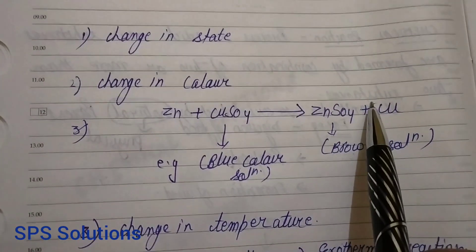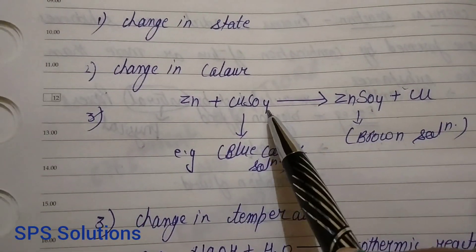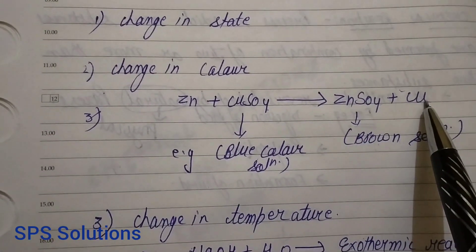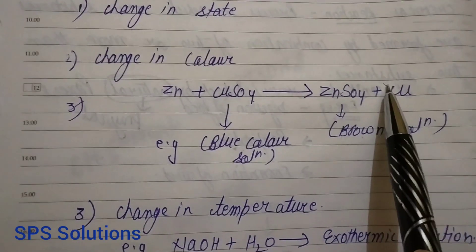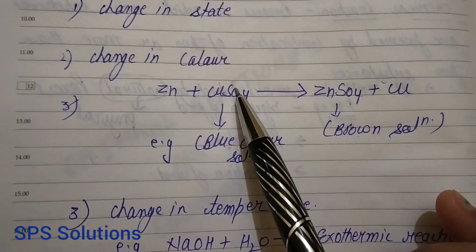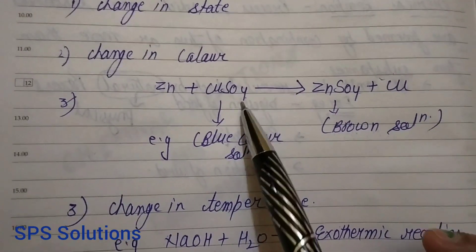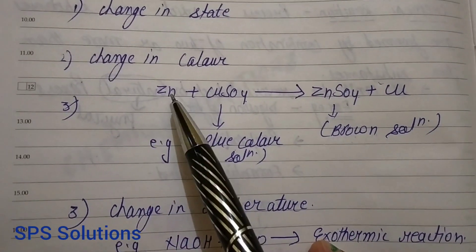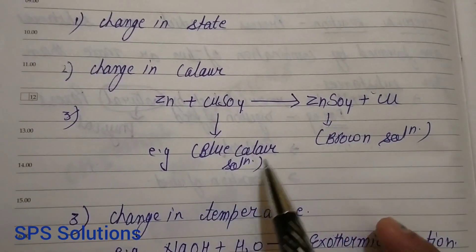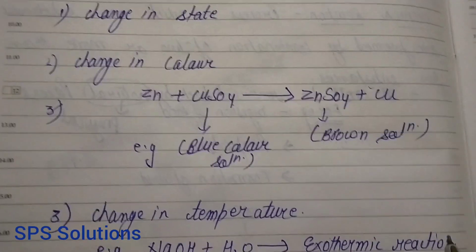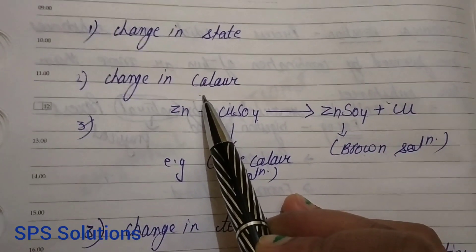For the color change example: zinc metal plus copper sulfate solution gives zinc sulfate solution plus copper metal. You studied this in 9th class as an example of displacement reaction. Copper sulfate is easily available in the lab and appears as a blue color. If you add zinc metal to this blue copper sulfate solution, then after 5 to 10 minutes, the blue color of the solution changes to greenish brown and finally to reddish brown. This is the example of change in color taking place during a reaction.